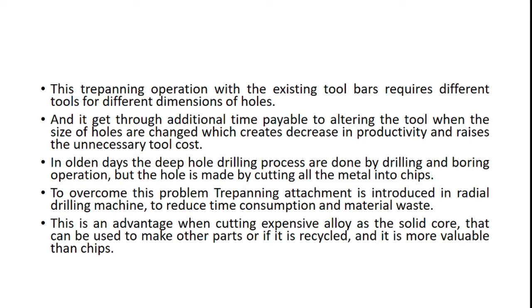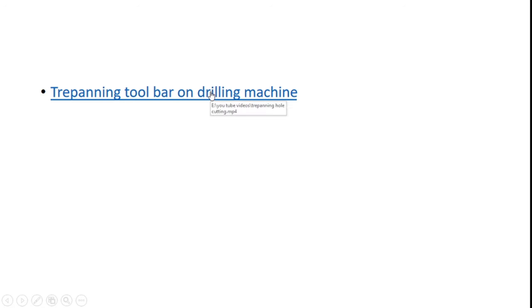In older days, the deep hole drilling process was made by drilling and boring operations. The hole was made by cutting all metal into chips — first the drilling operation was carried out, and then the enlargement of the hole was done through boring operation. The center part of the workpiece was all damaged and used as waste chips. Why can't we utilize the center part for an alternate purpose? For this reason, trepanning was introduced. A trepanning attachment is introduced in a radial drilling machine to reduce the wasteful consumption of material. This is an advantage when cutting expensive alloys, as the solid core can be used to make other parts or be recycled. It is more valuable than chips.